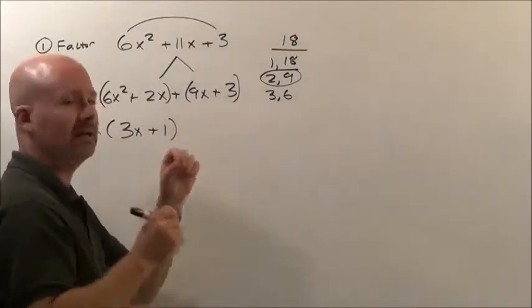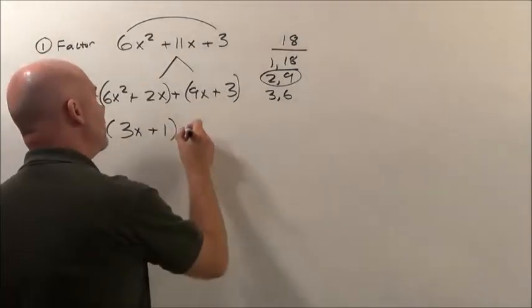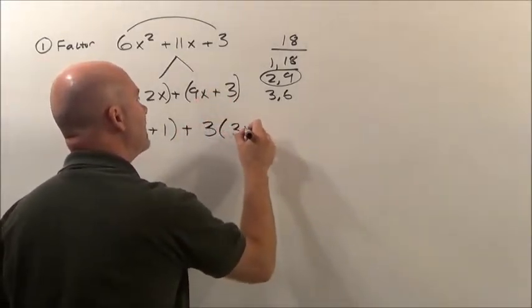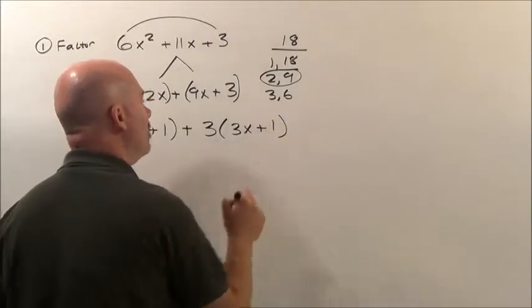Now here, 9x and 3, greatest factor is 3. So 3 comes out, and you're left behind with 3x + 1.